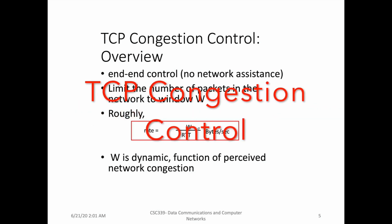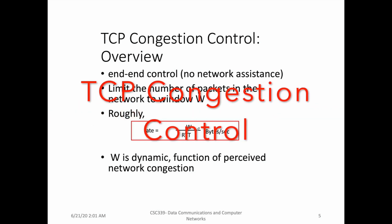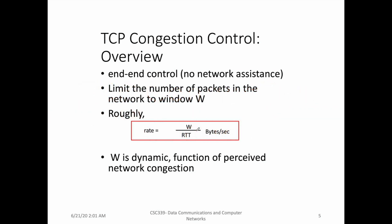TCP's congestion control mechanism is an end-to-end congestion control mechanism, meaning there is no network assistance involved. Routers are not sending any choke messages or explicit congestion notifications. This means the sender needs to limit the number of packets in the network to window W.